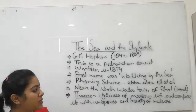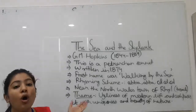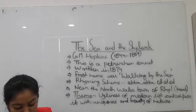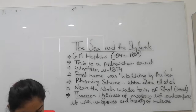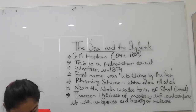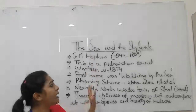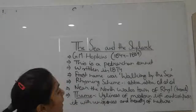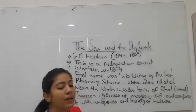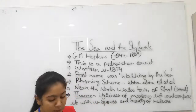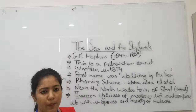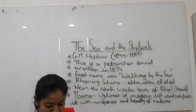Jo 14 lines ki poem hai, wo hamare sonnet hai. Us ki aath jo lines hai unko octave bulaya jata hai. Octave mein, poet kya bata raha hai? Octave is purely descriptive, giving details and imagery of sea and skylark. It is left to the sestet to make a comment — in the form of an exclamation. Toh 8 lines mein wo apna jo bhi modern life hai aur comparison kar raha hai, aur sestet mein wo comment kar raha hai — materialistic world pe, human life pe.